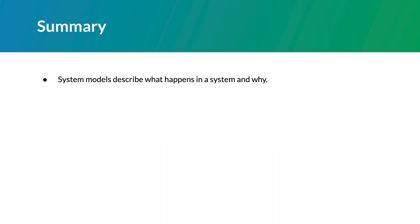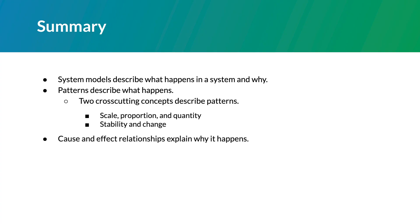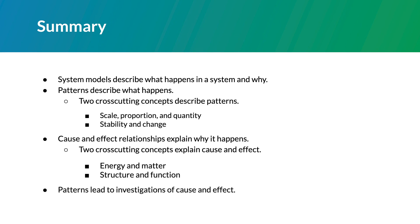System models describe what happens in a system and why. Patterns describe what happens. Two cross-cutting concepts describe patterns: scale, proportion, and quantity, and stability and change. Cause and effect relationships explain why it happens. Two cross-cutting concepts explain cause and effect: energy and matter, and structure and function. Patterns lead to investigations of cause and effect.